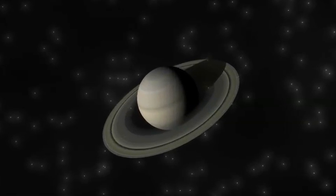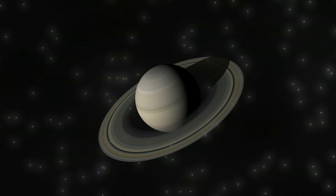Saturn is the second largest of the planets, only Jupiter is larger. Like all the gas giants, it has a system of rings, and the rings of Saturn are glorious.